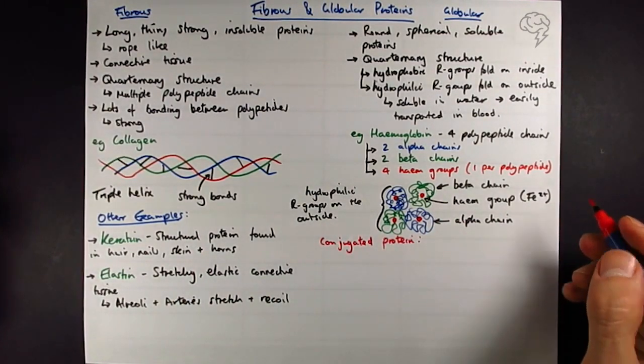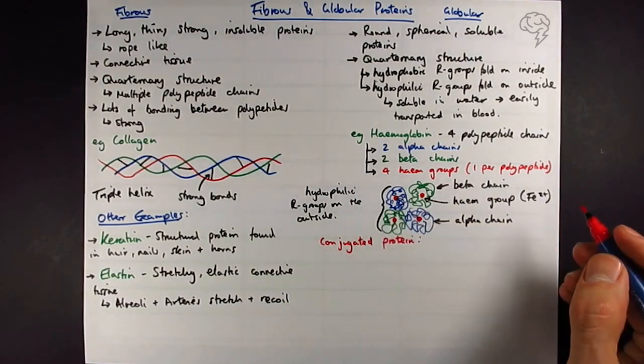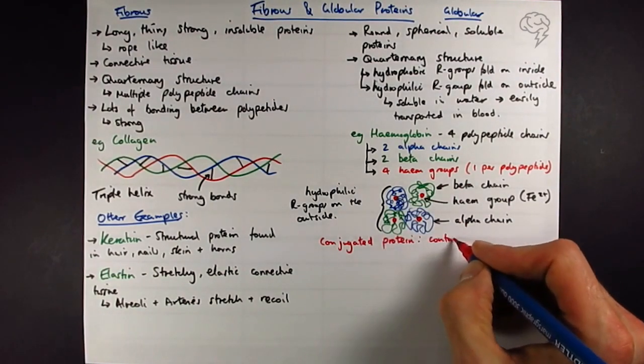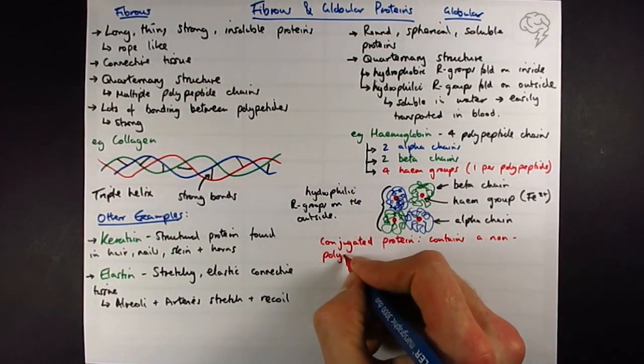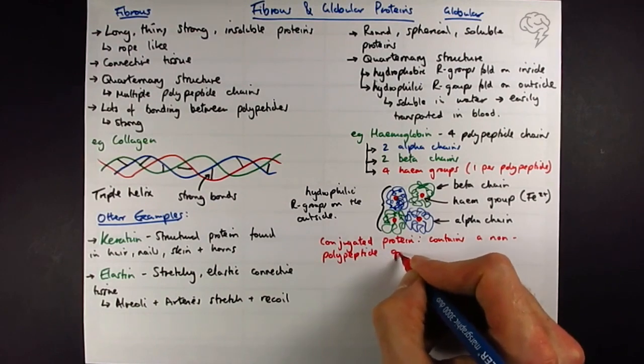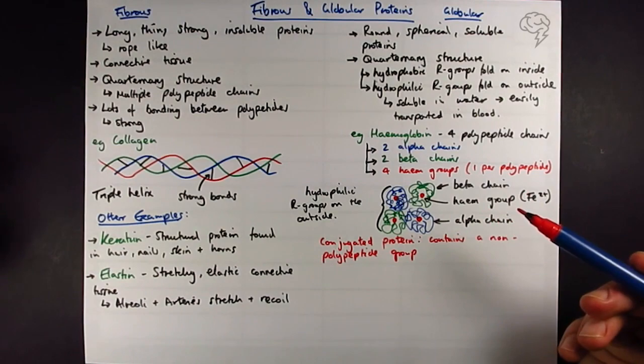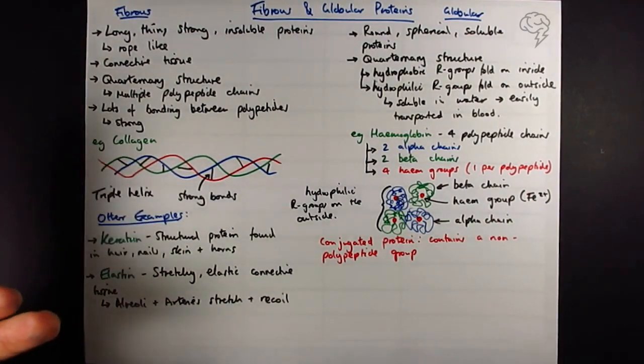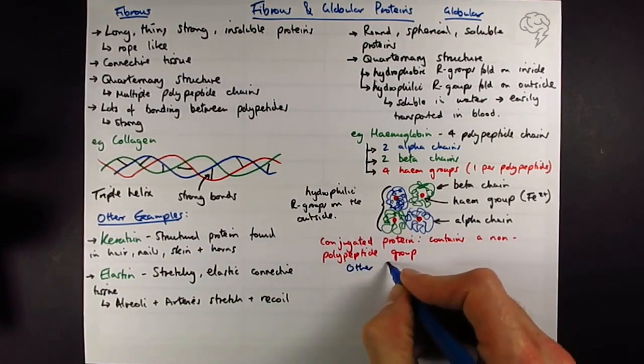The conjugated protein means that it contains a non-polypeptide group, so it's got other bits, it's not purely polypeptide. In this example, the non-polypeptide group is the prosthetic group. Obviously it could be a cofactor as well. See the video on that for full details.